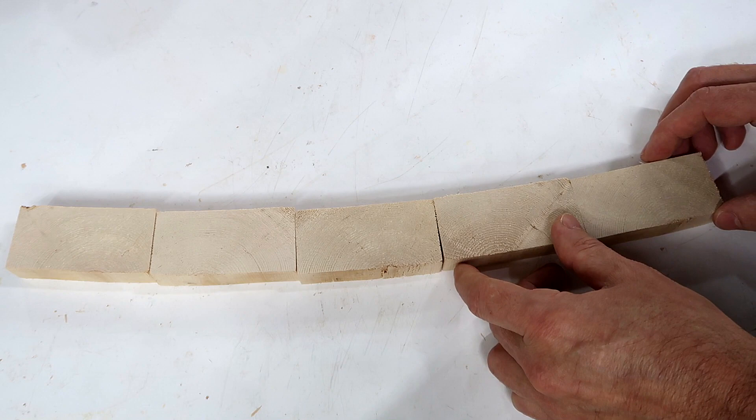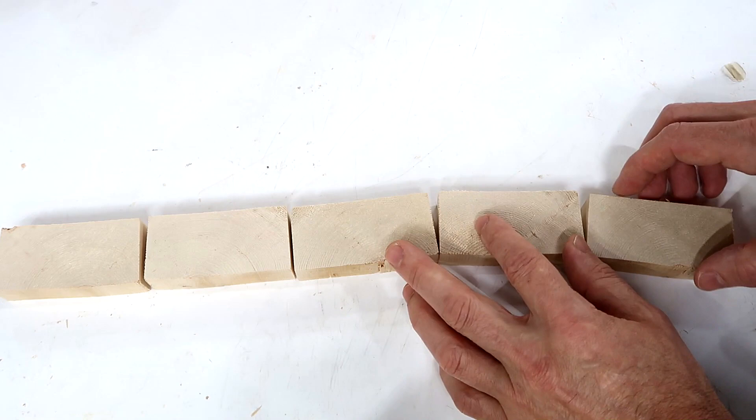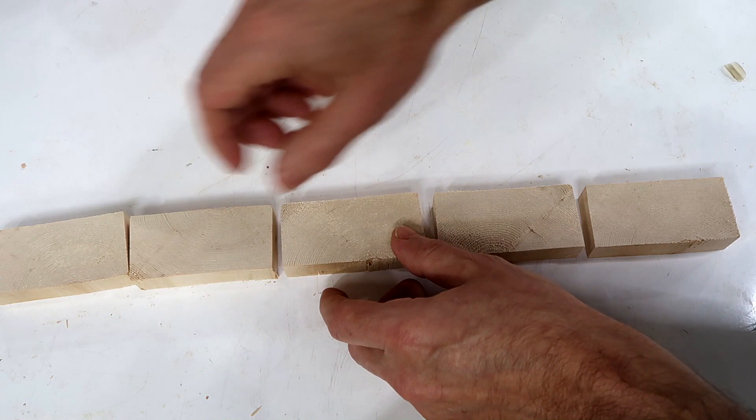And the way to counteract this is to alternate the direction of the grain in the pieces like so, and that way if all of these pieces warp, by alternating it it just creates a slight waviness instead of one big arc.